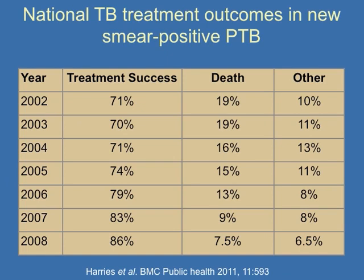For the same time period, if you look at this table, it clearly shows that treatment success rates among TB patients increased from 71% to 86%. And during the same period, the death rates declined from 19% to 7.5%. An example of operational research which proved feasibility, led to policy change, which led to change in practice, and ultimately improved health outcomes in TB patients.